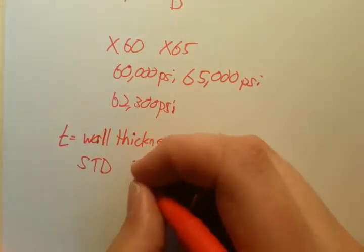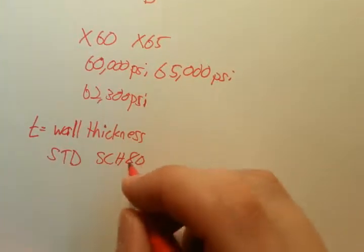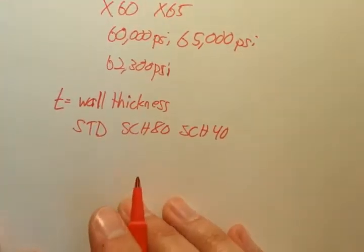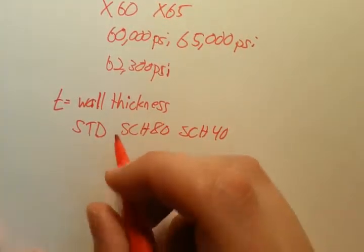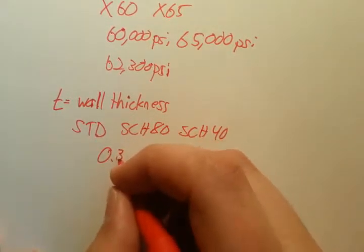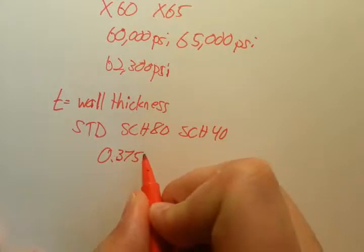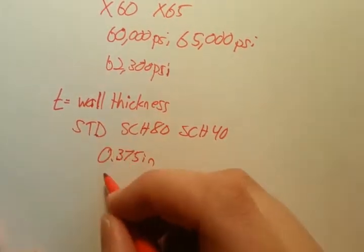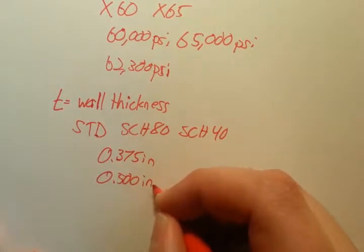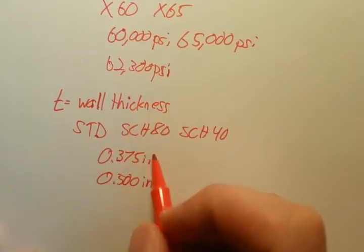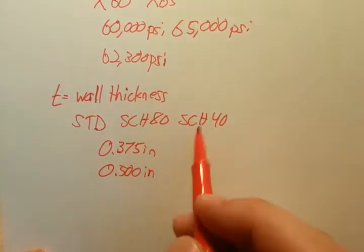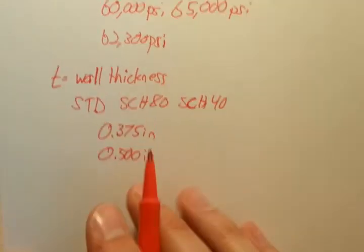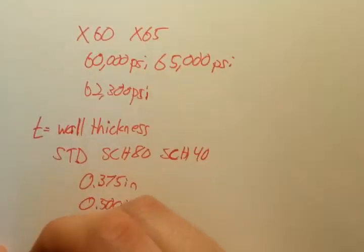It's typically better to use the actual thousandth of an inch notation, so 0.375 inches rather than standard, or 0.500. That way they know exactly what you're talking about. Some people get confused with standard and schedule 40, and sometimes they're different for different pipes, so it's better just to specify that.